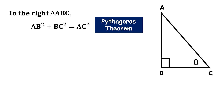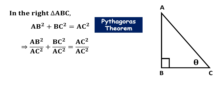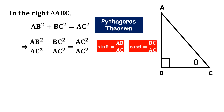Now if we divide both sides of the equation by AC², we get AB²/AC² + BC²/AC² = 1. Now, sine theta is perpendicular upon hypotenuse, so sin θ = AB/AC, and cos θ = BC/AC. So we can replace these values: AB²/AC² becomes sin²θ and BC²/AC² becomes cos²θ, giving us sin²θ + cos²θ = 1.